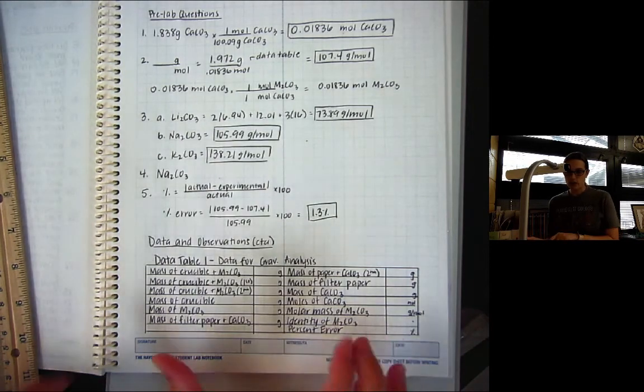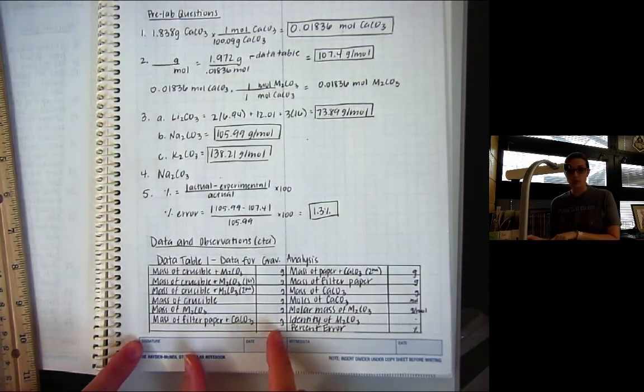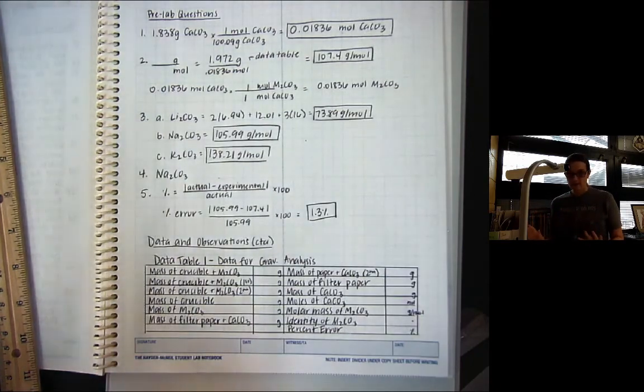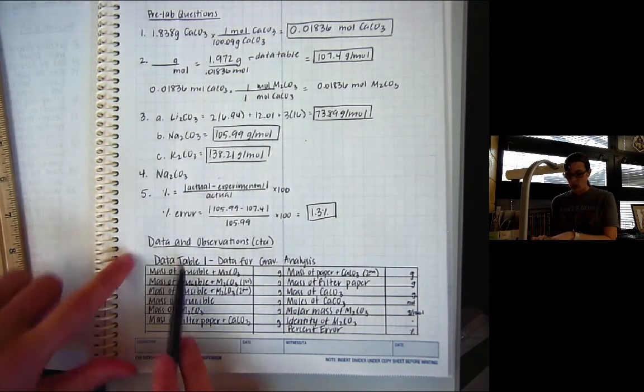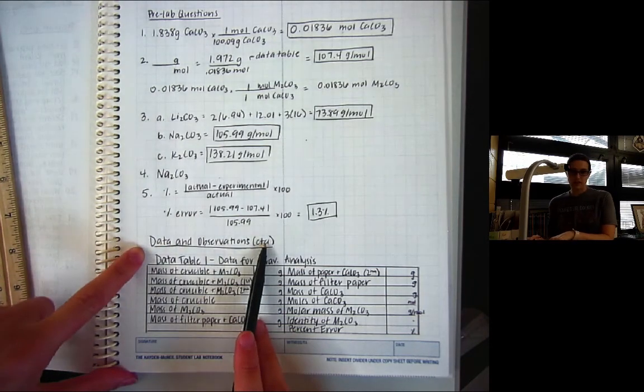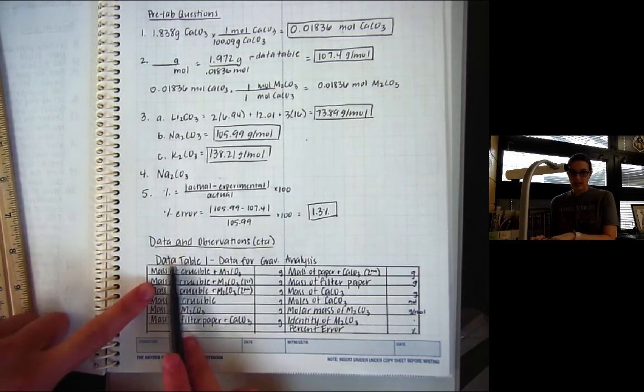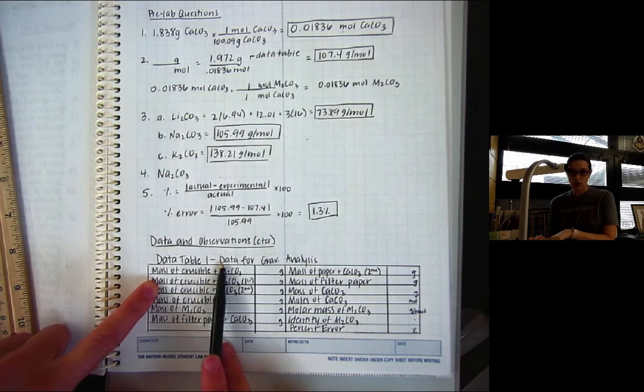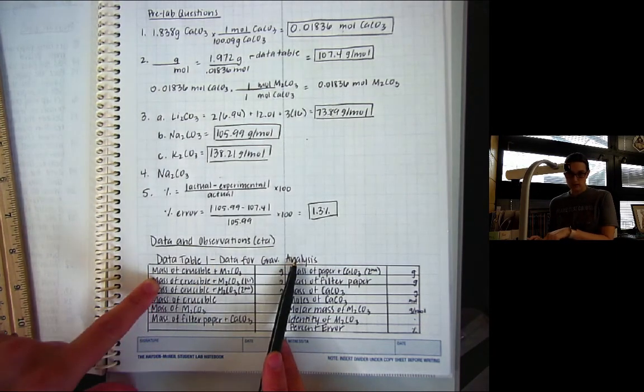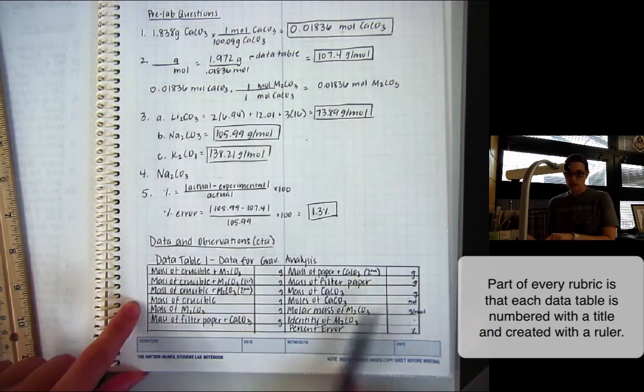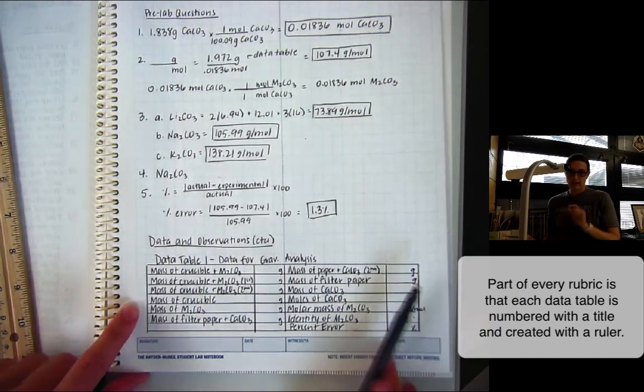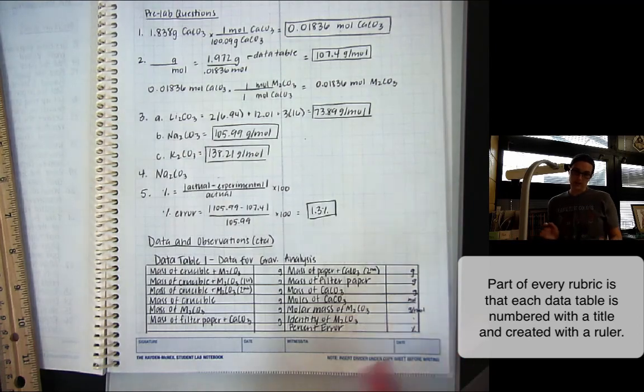Now, again, I made it into two columns. If you want to do it all in one column, if you have the space, fine. I just tried to save space here. But the biggest thing is that you continue it in your data and observation section. It has a number. So, data table 1. And it has a title like data for gravimetric analysis. And you've used a ruler. That is the biggest thing when it comes to data tables.